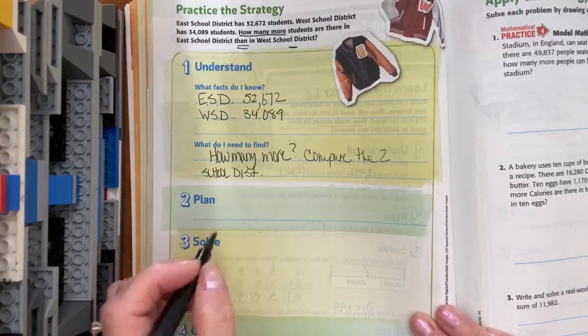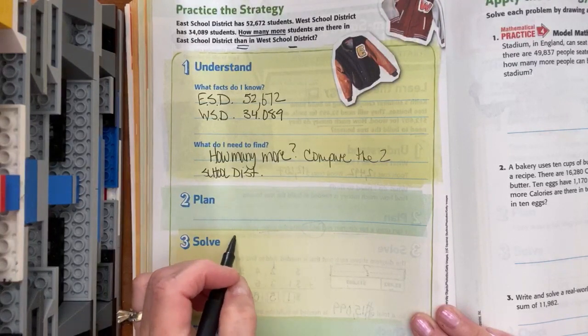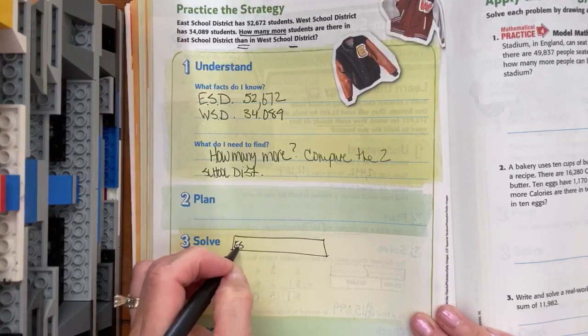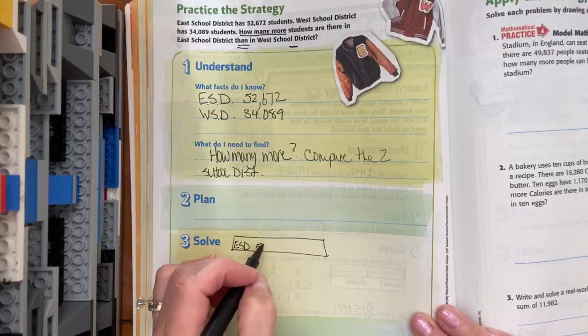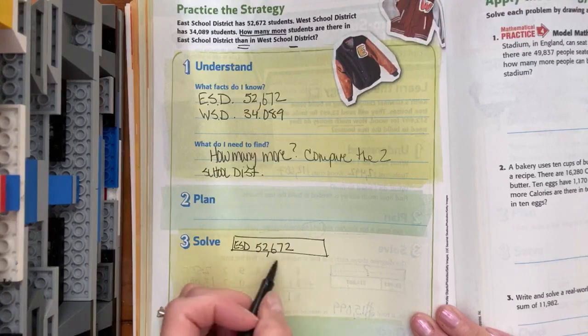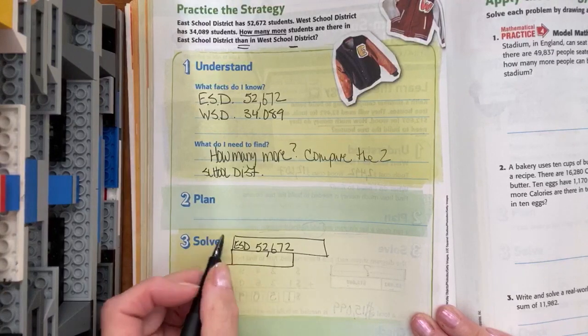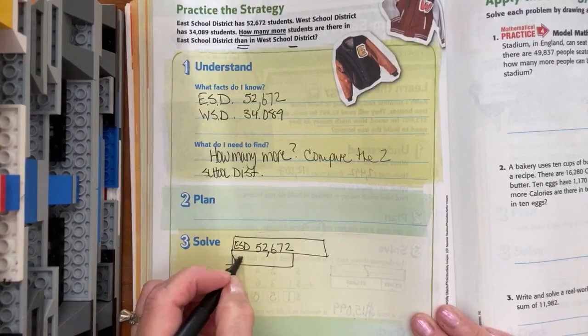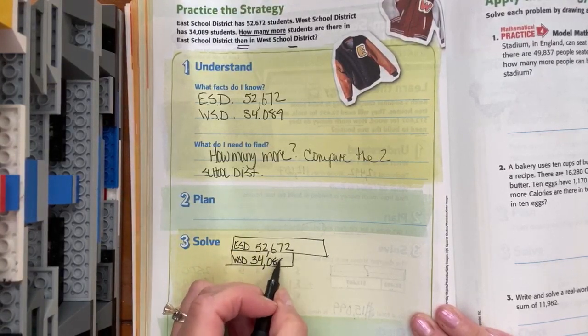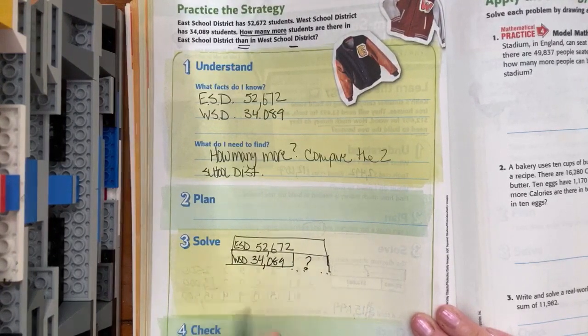So I'm going to plan. I'm going to make a bar diagram. I guess we'll do it right here. I'm going to label this as ESD. They have 52,672. And I know that the other school doesn't have as many, so I'll put WSD for the West School District: 34,089. And so this is going to be the big question mark.